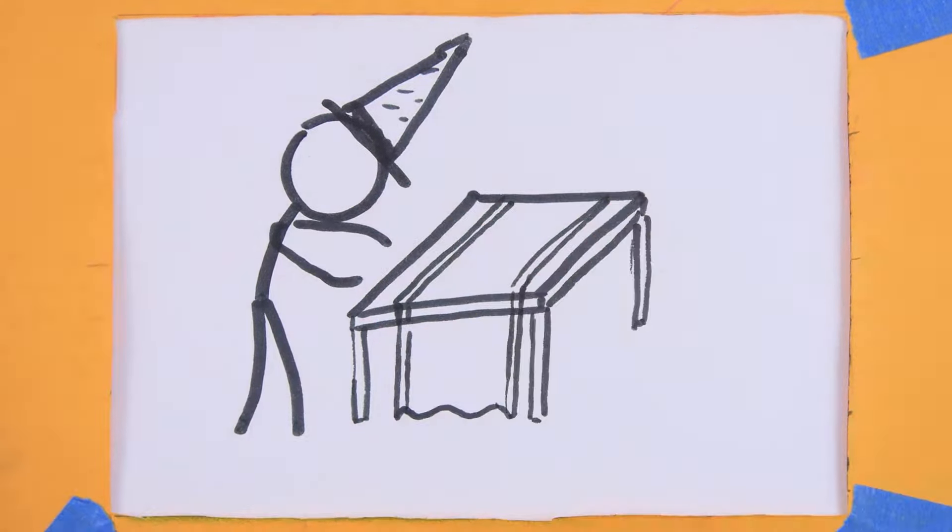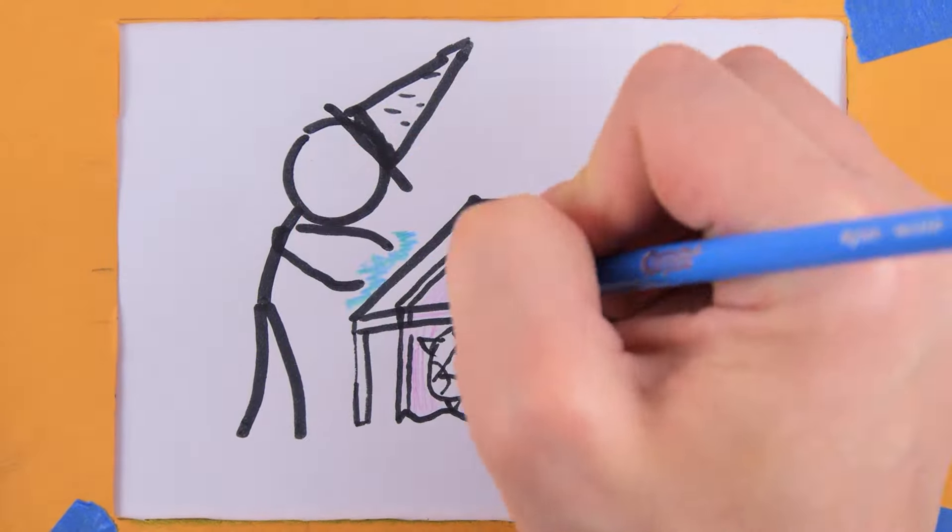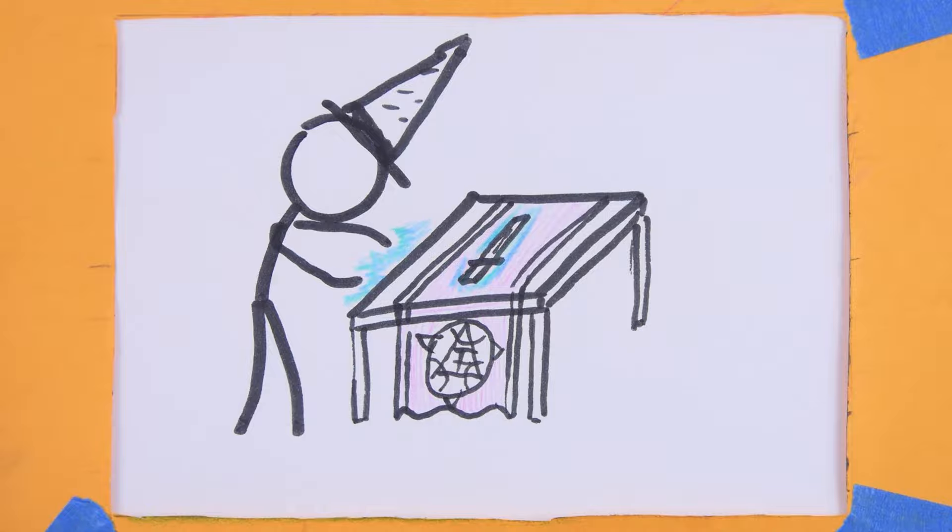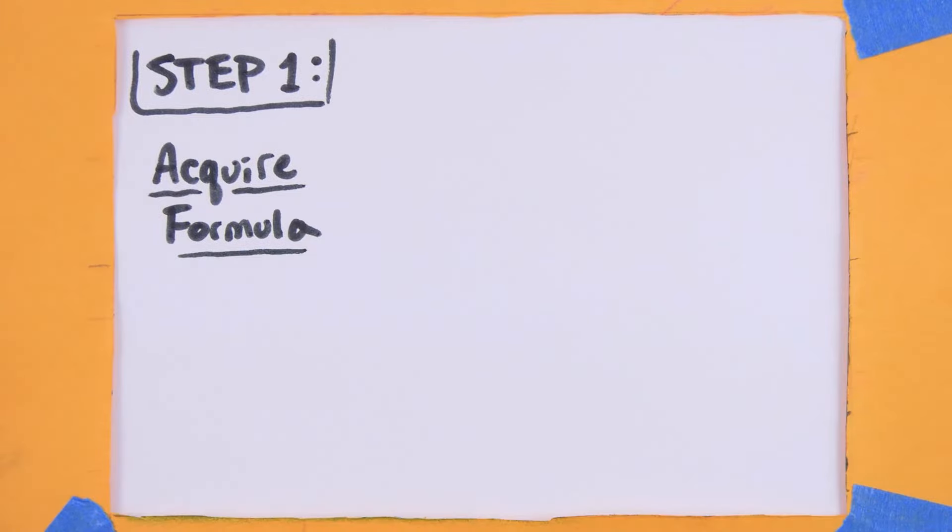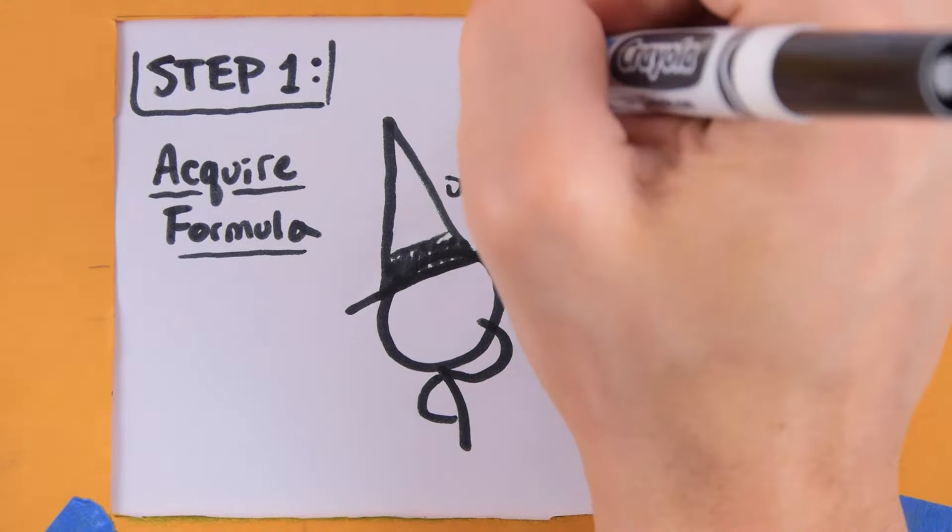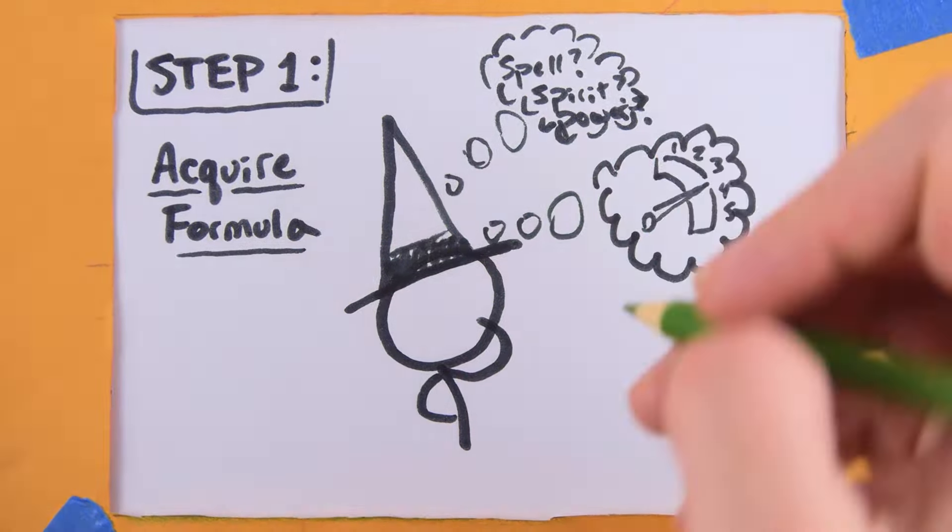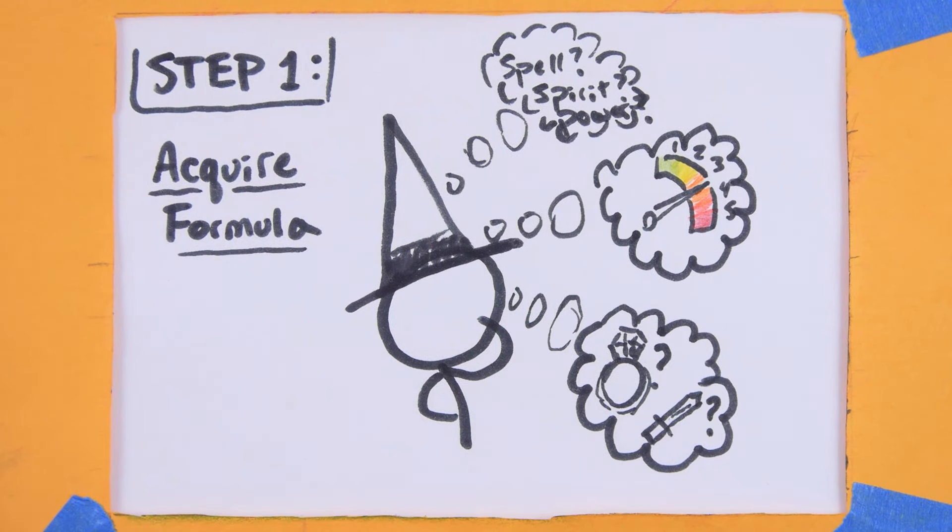Artificing is the process of crafting a magically enchanted focus, and is a 6-step process. Step 1: Acquire or design the formula for your desired focus. Decide what kind of focus you want, what force you want it to be, and what form you want it to take.